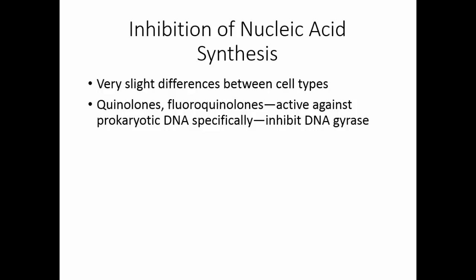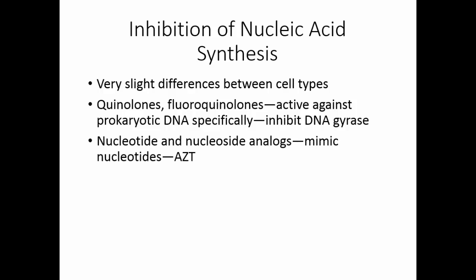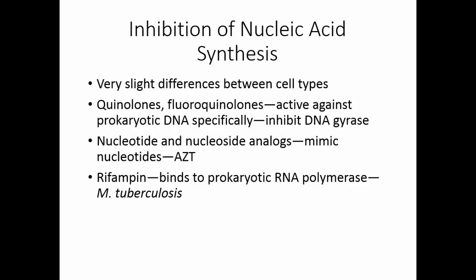They actually inhibit the DNA gyrase, which is the enzyme that unwinds the DNA prior to replication. Nucleotide and nucleoside analogs mimic nucleotides — this is how AZT works as an AIDS drug. Rifampin binds to prokaryotic RNA polymerase and is effective against Mycobacterium tuberculosis.